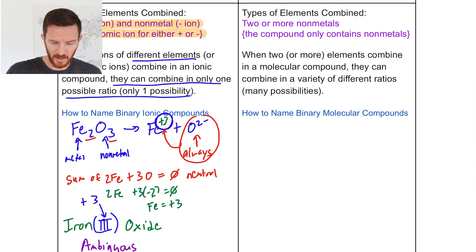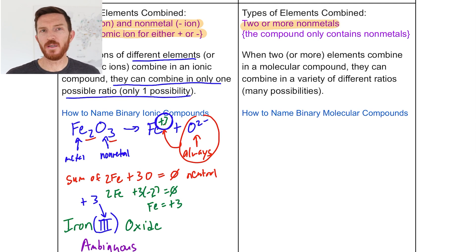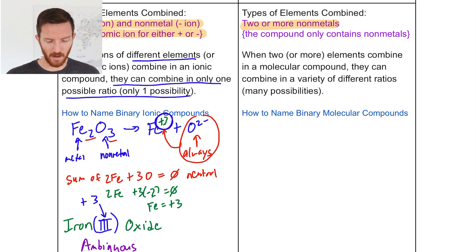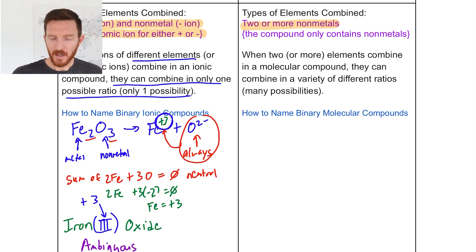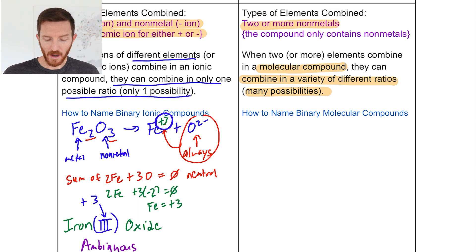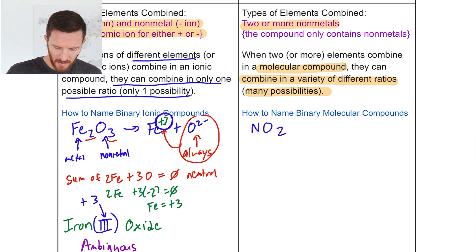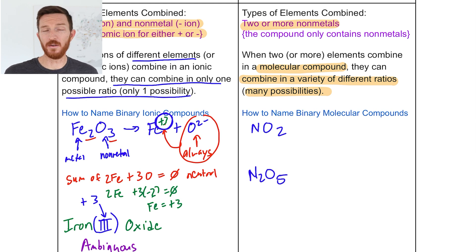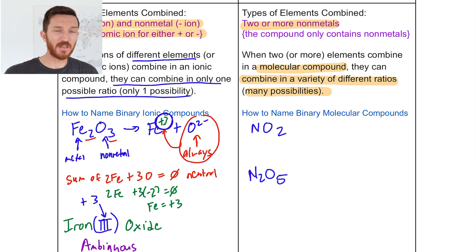Now let's look at molecular compounds. We can identify them because they contain two or more nonmetals — no metals present. What's important about molecular compounds is that they can combine in many different possible ratios — this is the law of multiple proportions. So we need a name that corresponds to one specific compound. For example, nitrogen and oxygen can combine as NO₂ or as N₂O₅, and we need distinct names for each.